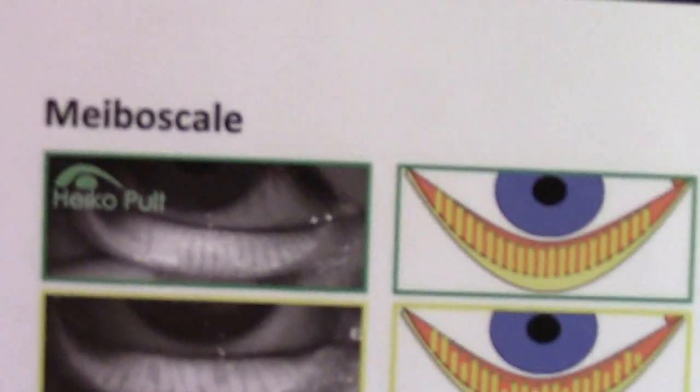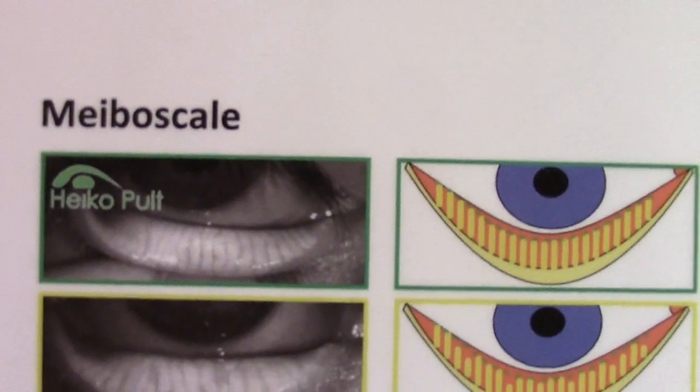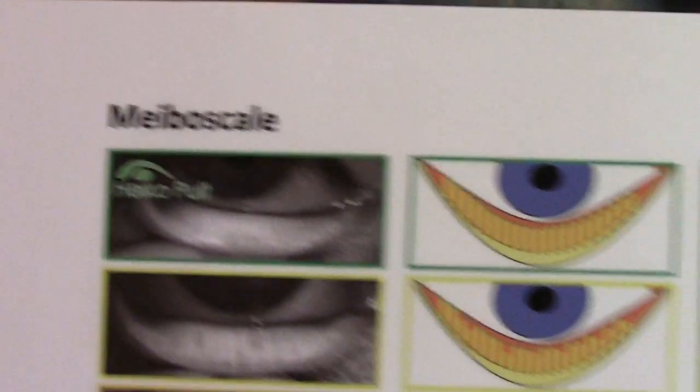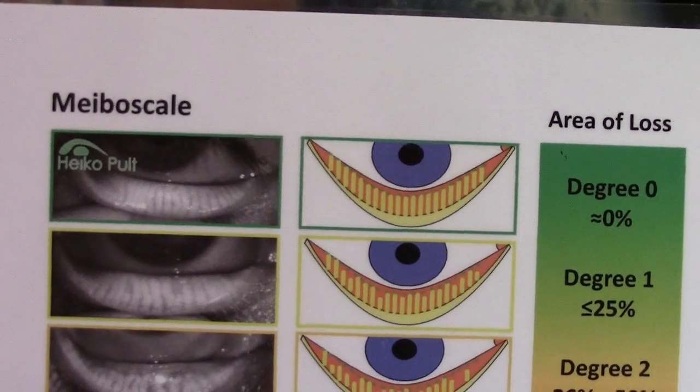So I'm going to show you an image of what the glands look like. Hopefully it will show up okay that you can see it. But you can see this lid has been flipped inside out, and there's a whole row of glands that are along the lid that are called meibomian glands.